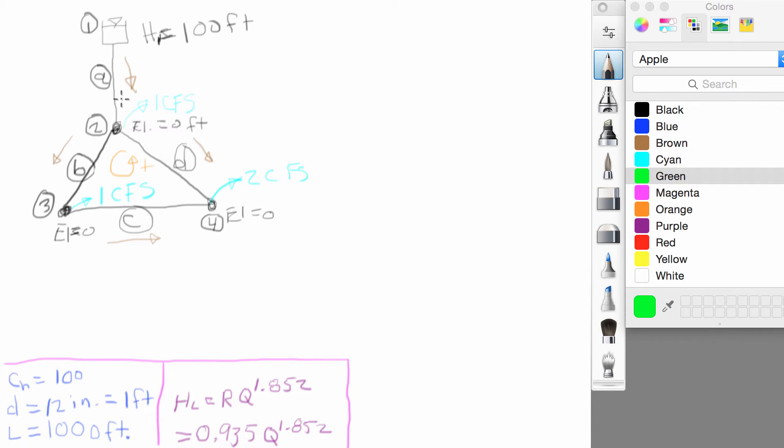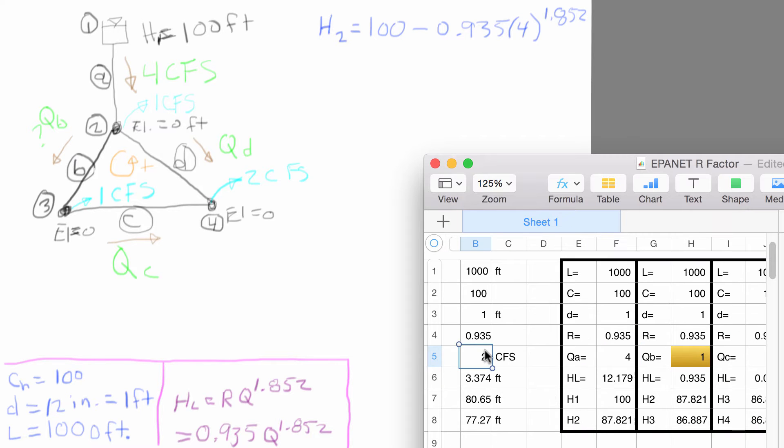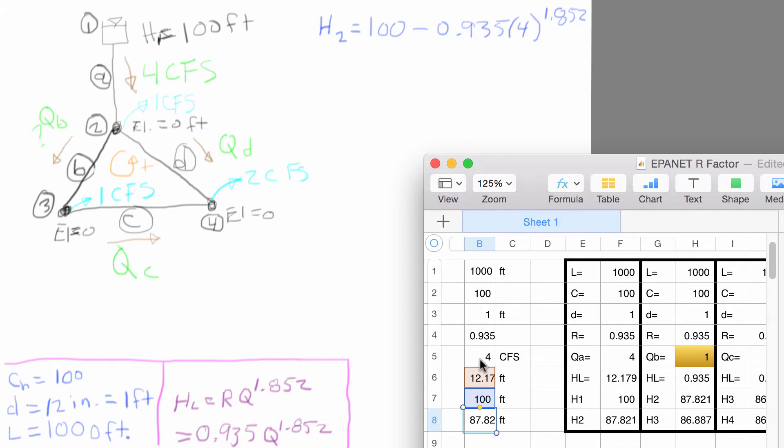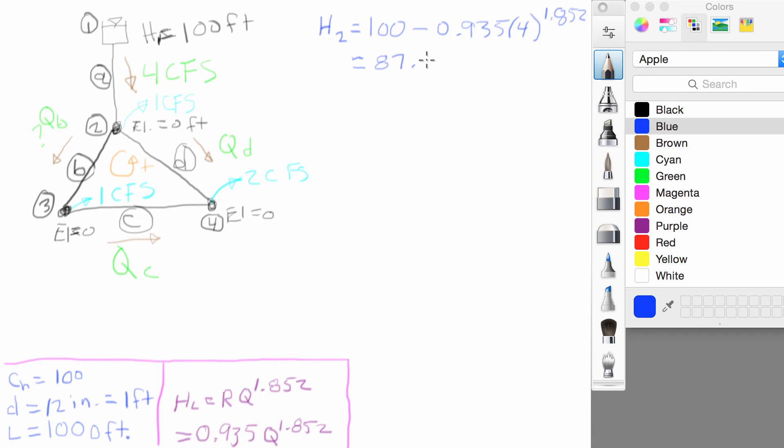We know that the flow in pipe A is going to be easy because there's no loop here. We've got four CFS of demand down here. So we know that we have four CFS up here. We're actually going to have to guess these other three. So we're actually going to call this one Q sub B, Q sub C, Q sub D. If we write the equations here, the head at node two is equal to 100 minus 0.935 times 4 raised to the 1.852. We can actually go ahead and solve that one right now. We got the head at two was equal to 87.82.